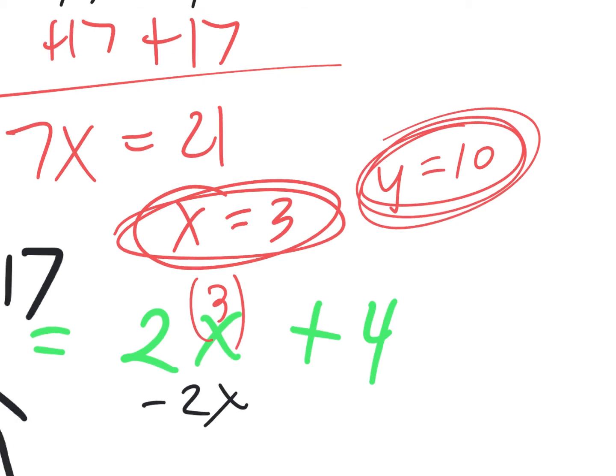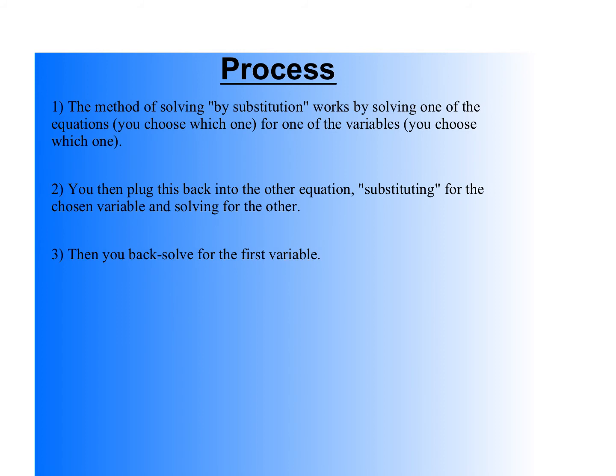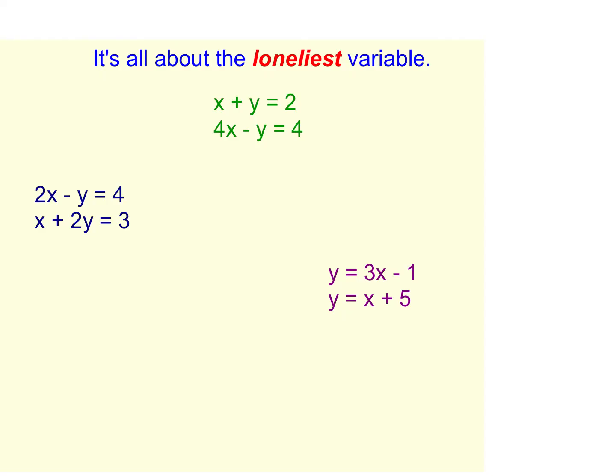All right. So, let's try one of the ones that's in the notes here. We'll talk you through the process one more time. You solve one of the equations for one of the variables. Then you plug this into the other equation, substituting it and solving. Then you back solve for the first variable. That's what they're calling it. Like, when you got x equals 3, you stick it in and back solve it for y.